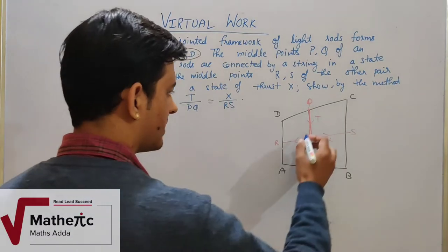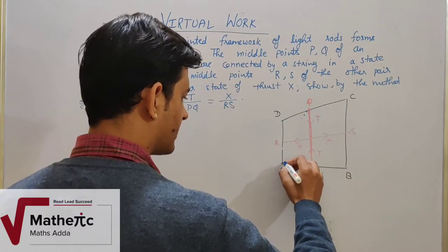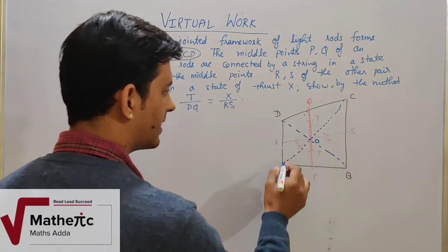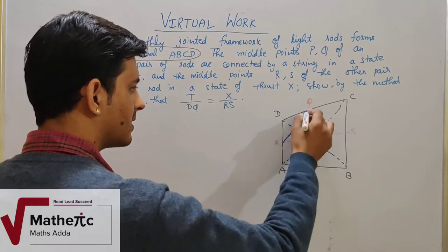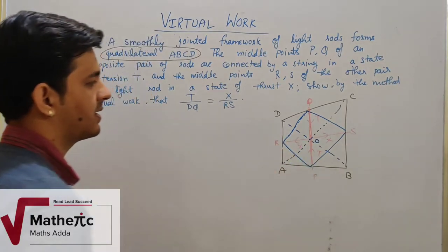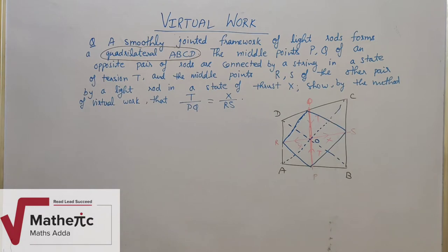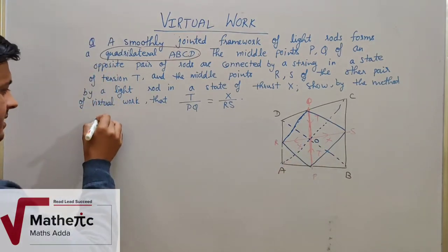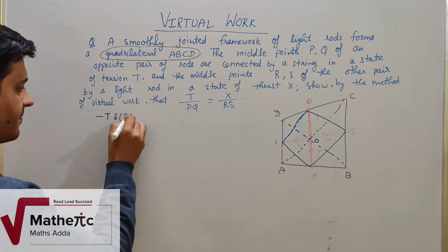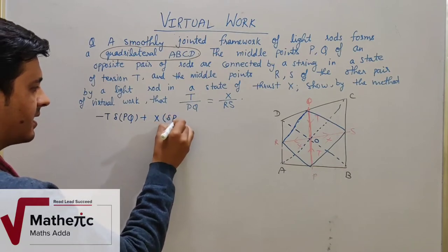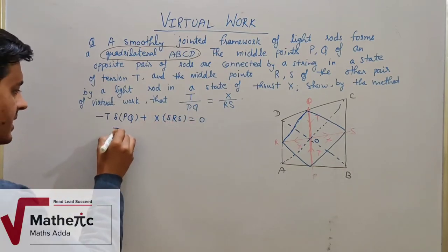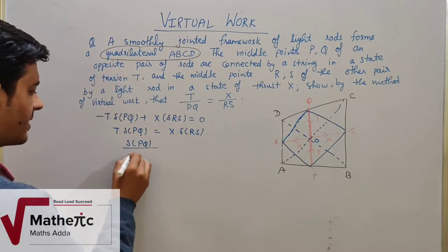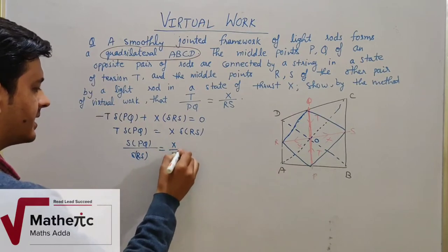We need to complete the diagram and apply the principle of virtual work. There are two forces: tension and thrust. The formula gives us: minus T·δ(PQ) plus X·δ(RS) equals 0. Therefore T·δ(PQ) equals X·δ(RS), which gives δ(PQ) upon δ(RS) equals X upon T. This is equation number 1.